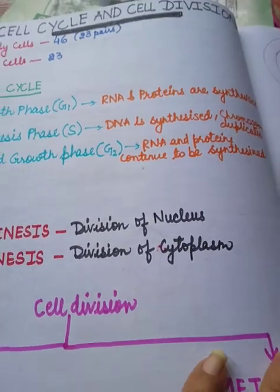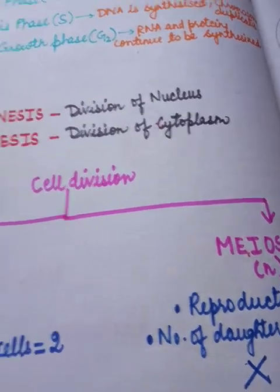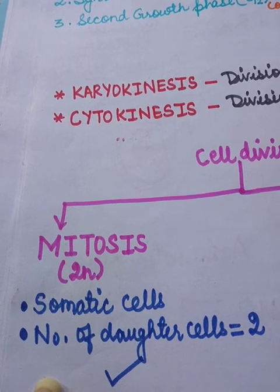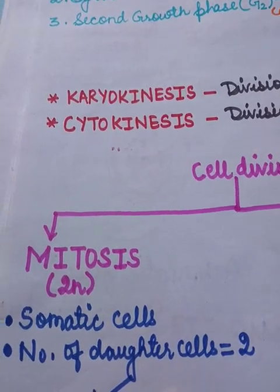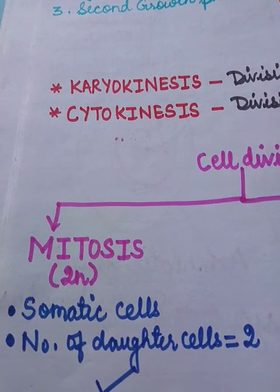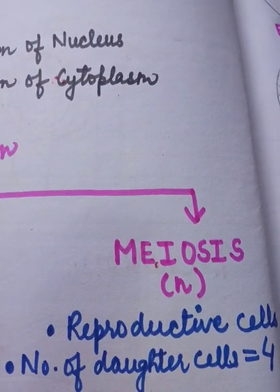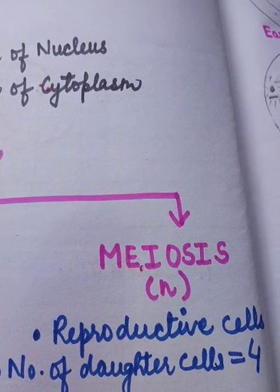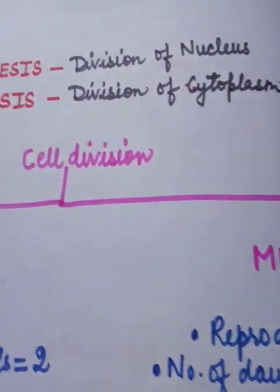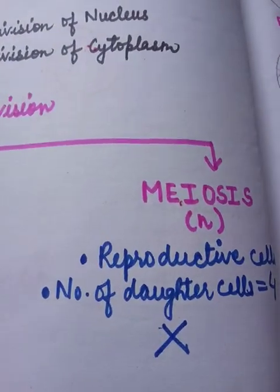Cell division has two main types: mitosis and meiosis. Mitosis occurs in somatic cells, also called body cells or growth cells, and when they divide they produce two daughter cells. Meiosis is a cell division which occurs in reproductive cells or sex cells, and the number of daughter cells produced in meiosis is four.